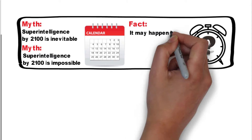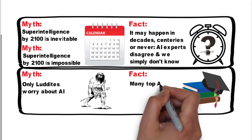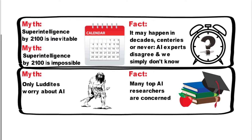So then he goes, well, okay, let's look at what are the myths. One of the big myths is that superintelligence by 2100 is inevitable, and the other is superintelligence by 2100 is impossible. And he says it may happen in decades, centuries, or never, but the AI experts disagree, and we simply don't know. The next myth is only Luddites worry about AI.